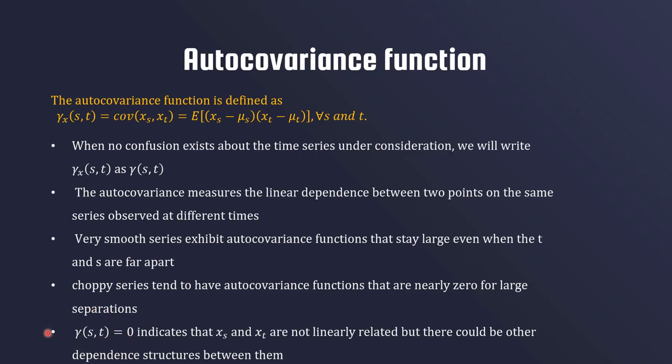The covariance function only talks about the linear relationship between variables. If the covariance between two variables is zero, that means there is no linear relation between them, but there could be some other non-linear relation between them.